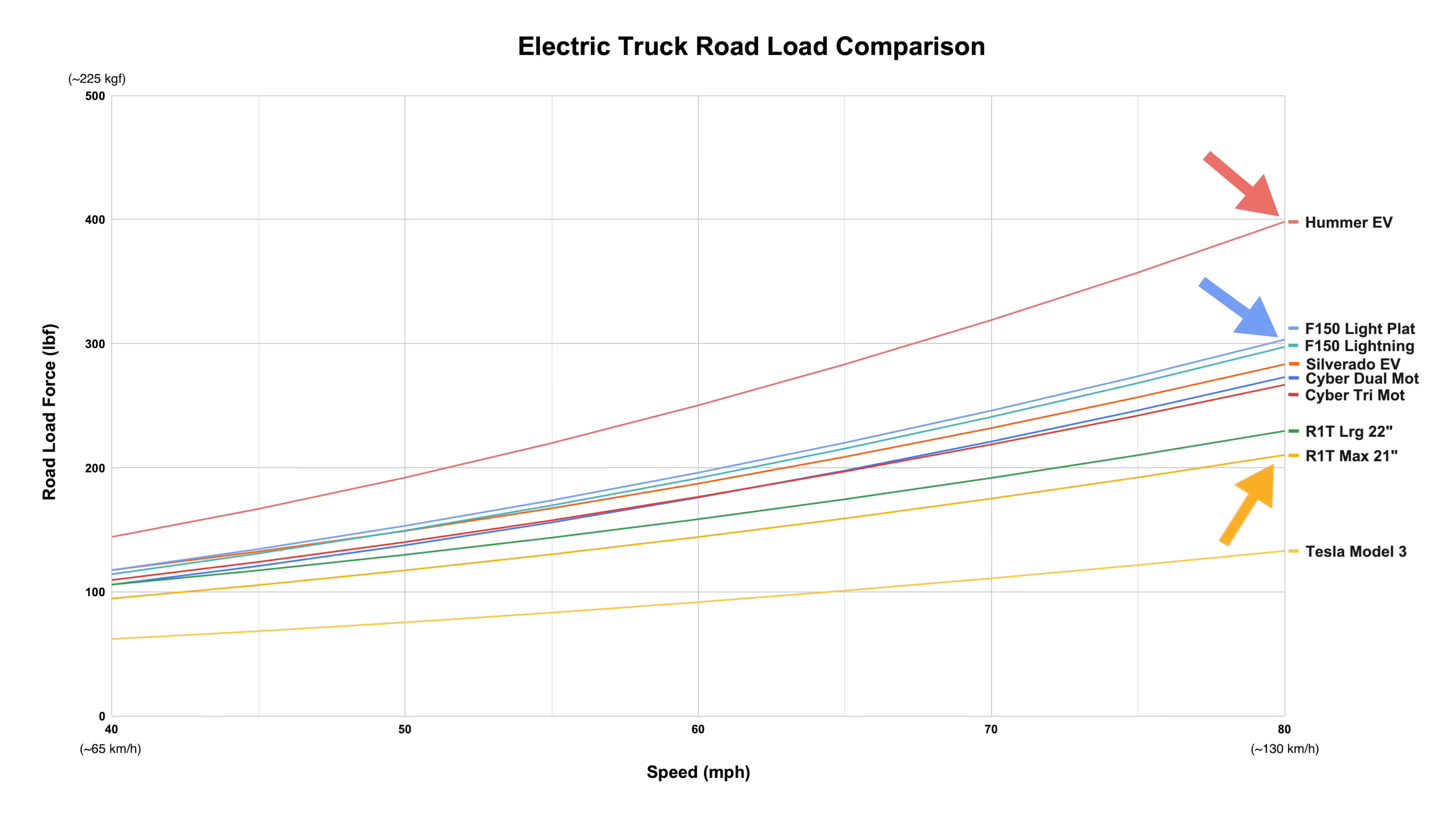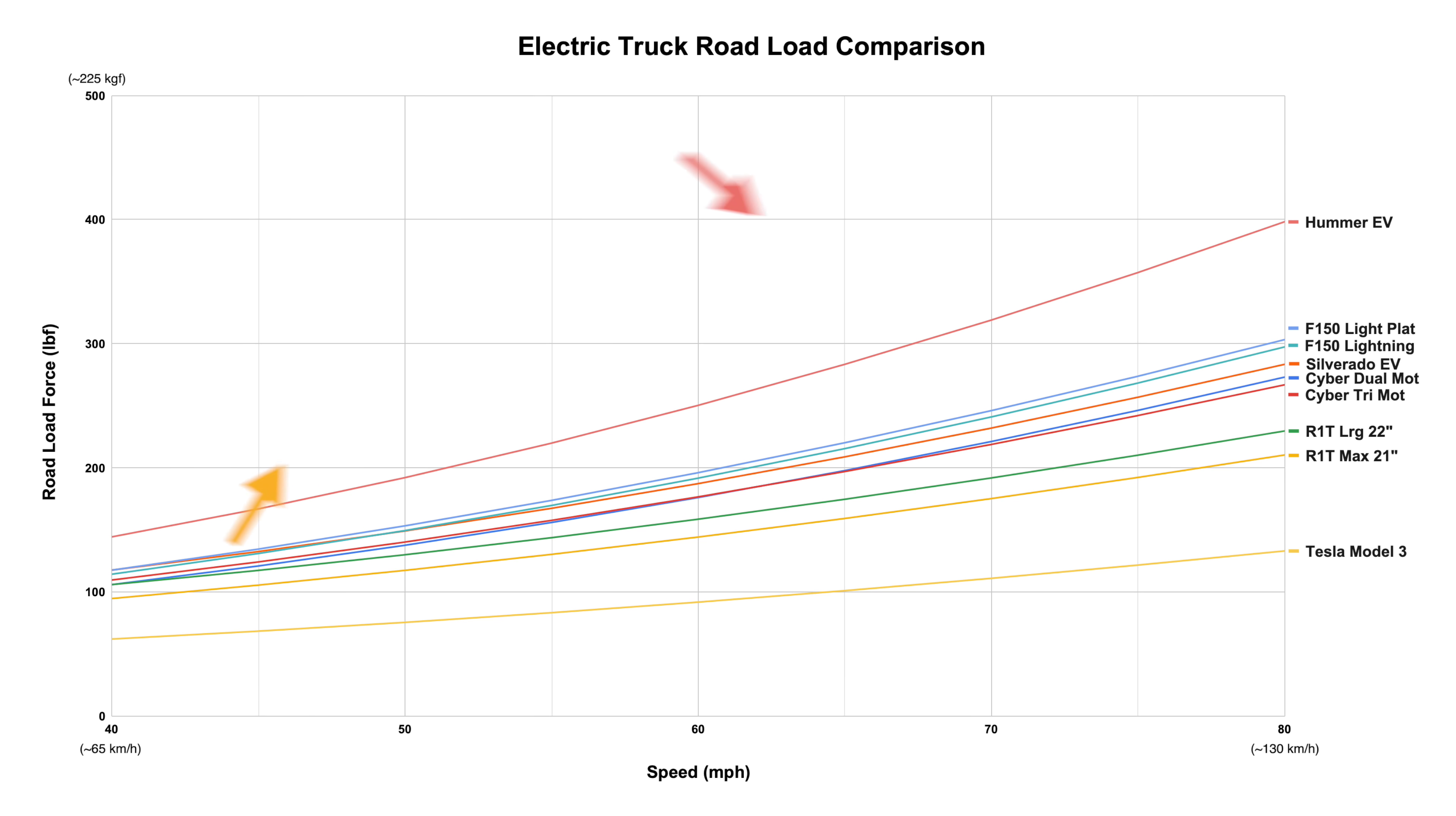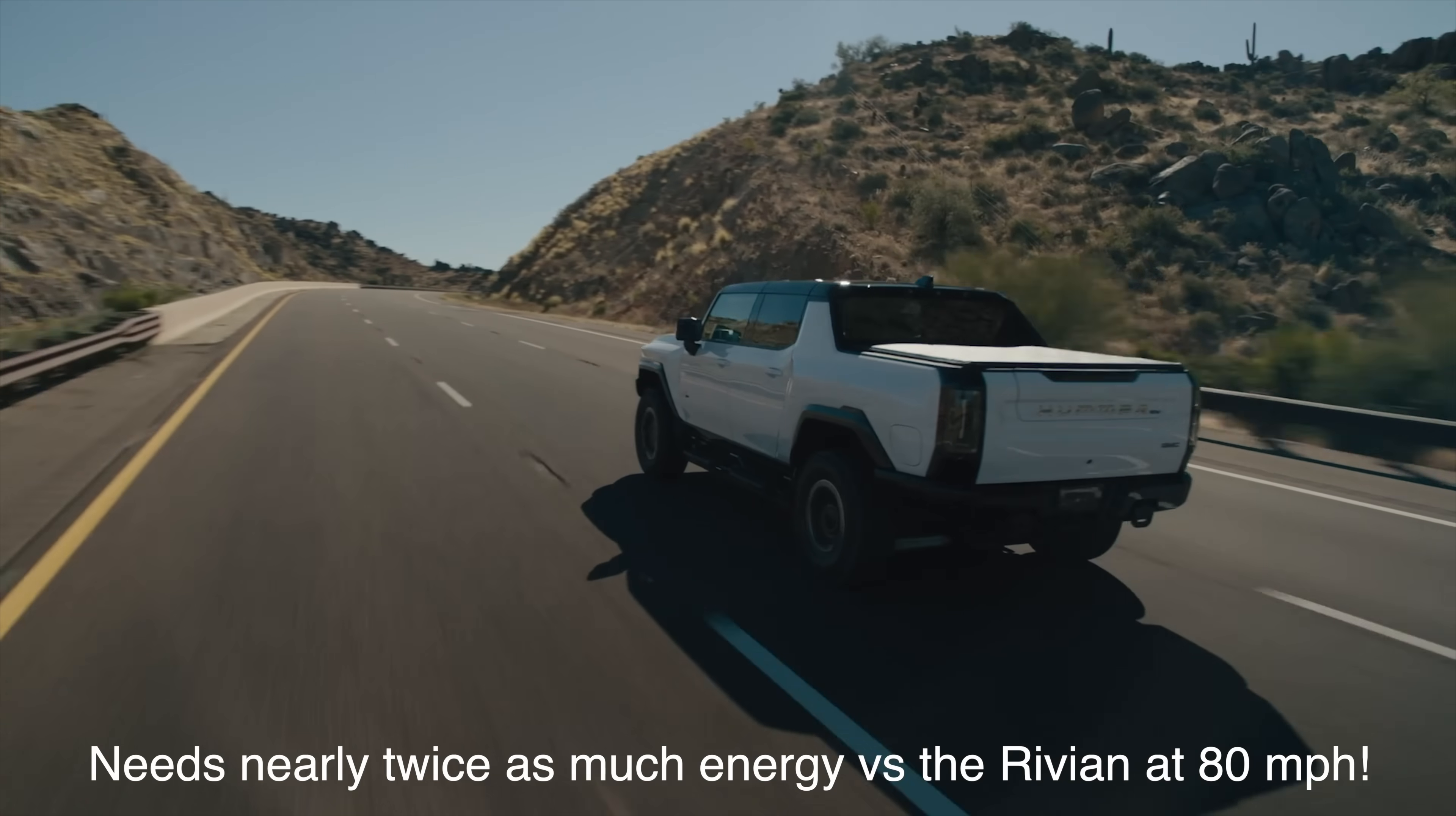So why is their range about the same, even though they have very different battery sizes? Well, if you look at the EPA road load data, this explains why that is. The Hummer isn't very aerodynamic, it weighs an incredible amount, and it has massive tires. And all of this translates into a really inefficient vehicle. So if you look at that road load data for a Rivian versus a Hummer at 80 miles per hour, the Hummer has nearly double the resistive force at that speed, meaning it takes about twice as much energy at 80 miles per hour for the Hummer to travel down the road than it does the Rivian.